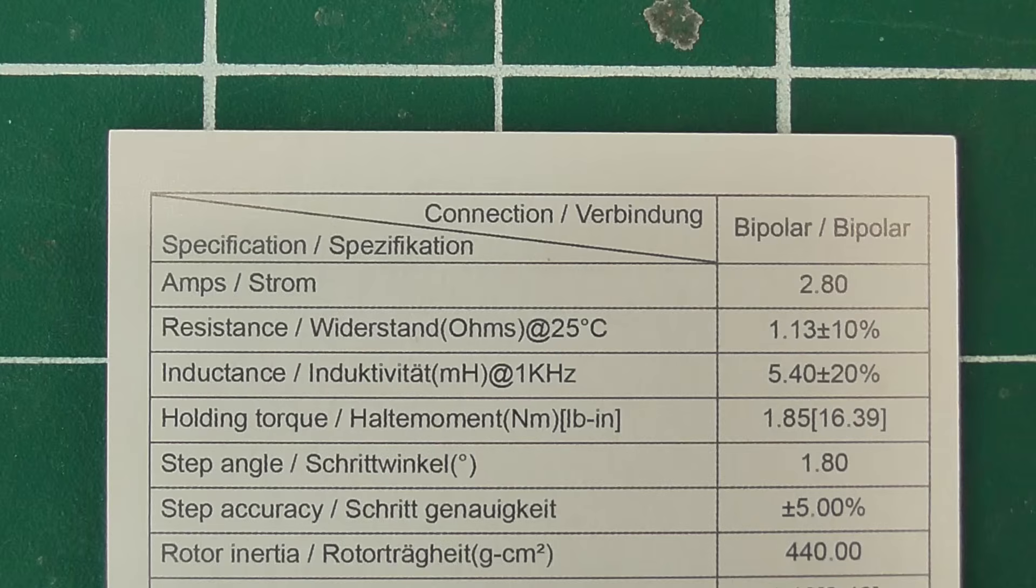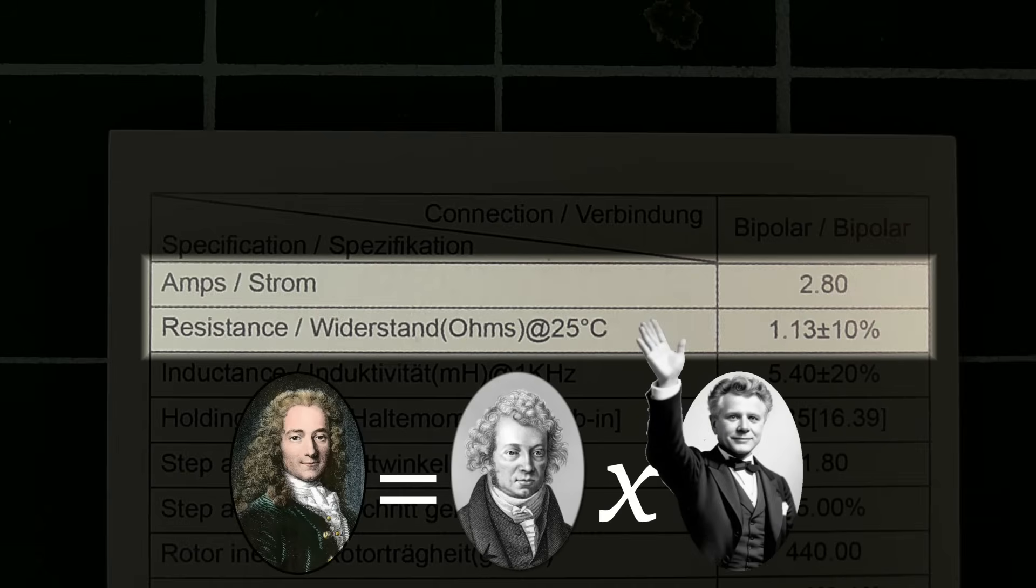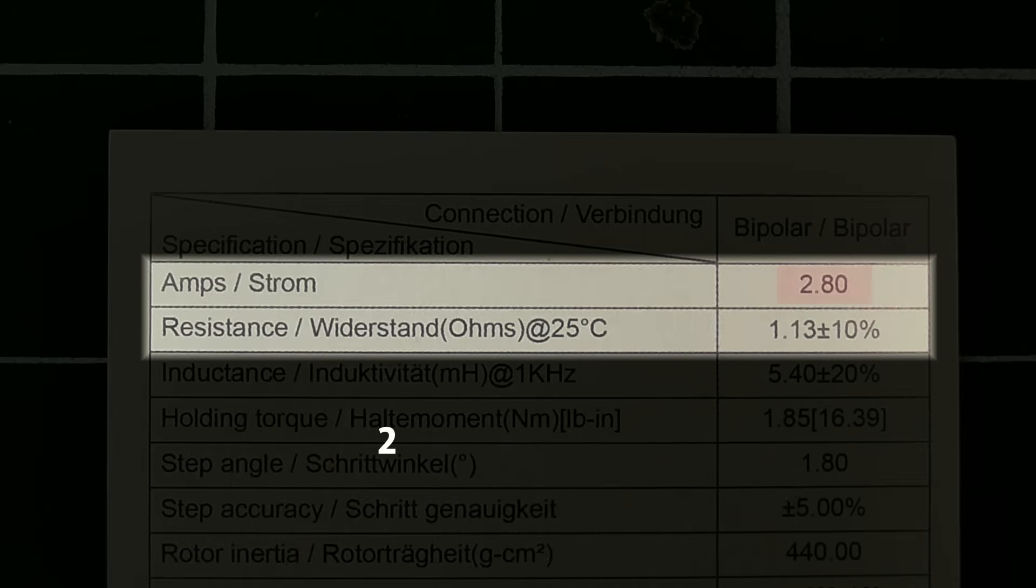The voltage of a stepper motor is often not specified, because it doesn't really have the same meaning it would for a DC motor. But the current and resistance are stated, so we can easily work it out using Ohm's law. 2.8 amps times 1.13 ohms is approximately 3 volts. Note that the resistance is given with an error of plus or minus 10%. So the voltage could be anything from 2.85 to 3.48 volts. But 2 to 3 volts is typical for a stepper motor of this size.